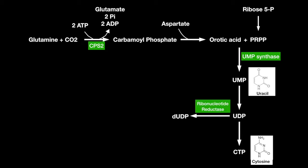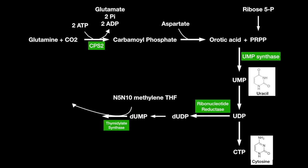Deoxy-UDP can be dephosphorylated into deoxy-uridine monophosphate (dUMP). The enzyme thymidylate synthase uses N5-N10-methylene-THF and dUMP to produce dTMP — thymidine monophosphate — and DHF. Thymidine monophosphate can be used as a source for thymine.